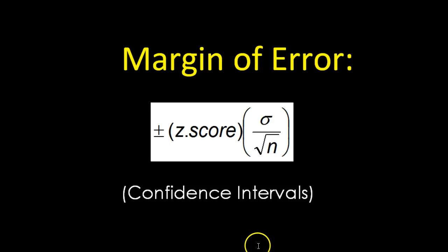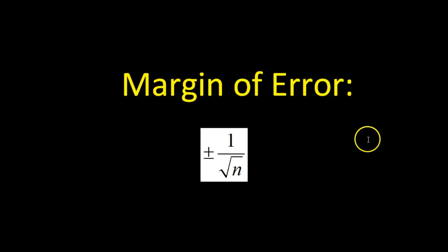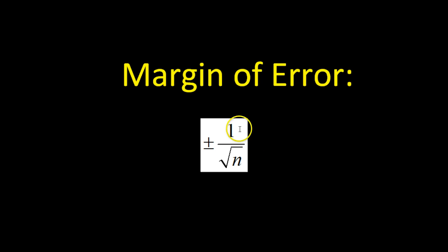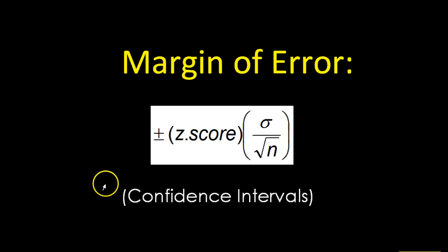This video is all about margin of error and confidence intervals. You might remember earlier in the unit we talked about margin of error, and we had a formula where we would find the margin of error by doing 1 over the square root of n, where n was the sample size in a survey. This is another way of calculating margin of error, involving the z-score.